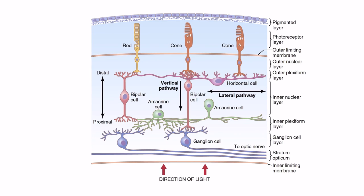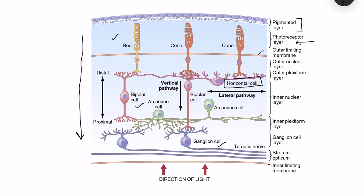The retina consists of 10 layers. From outer to inner, the outermost is the pigmented layer, and near it is the photoreceptor layer which consists of rods and cones. Throughout the layers there are two pathways: a vertical pathway involving photoreceptors, bipolar cells, and ganglion cells; and a horizontal pathway involving horizontal cells connecting different photoreceptors, and amacrine cells connecting bipolar cells with ganglion cells.